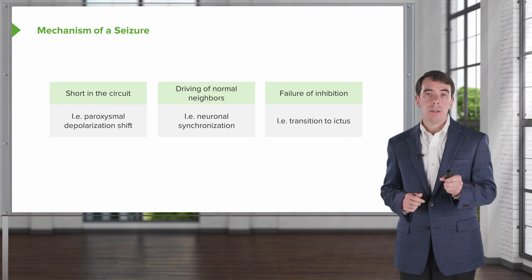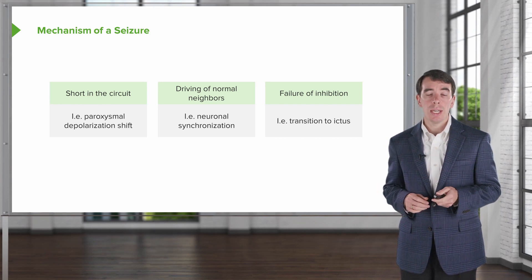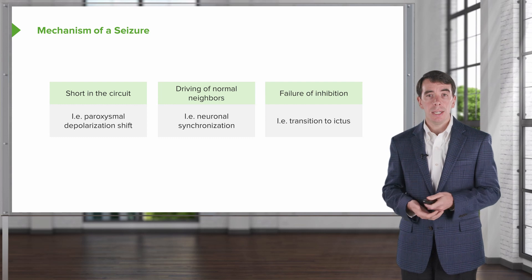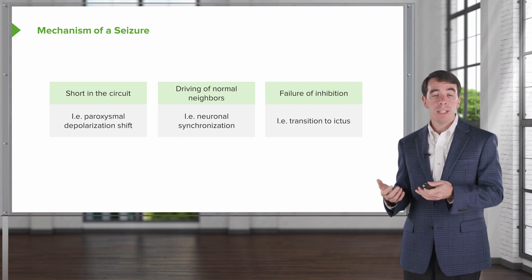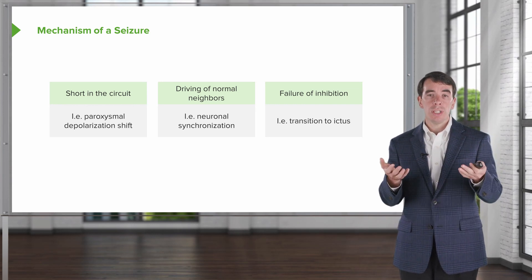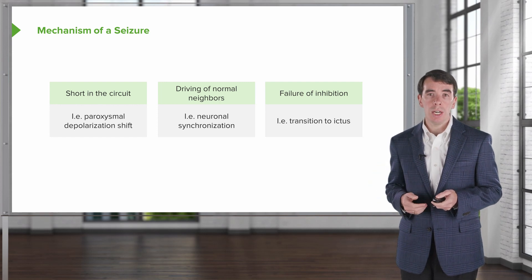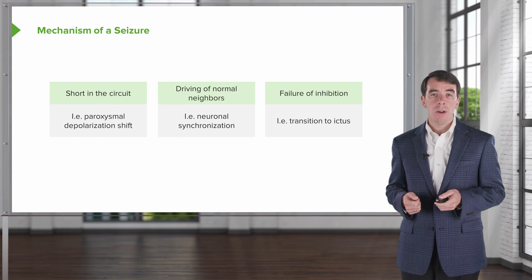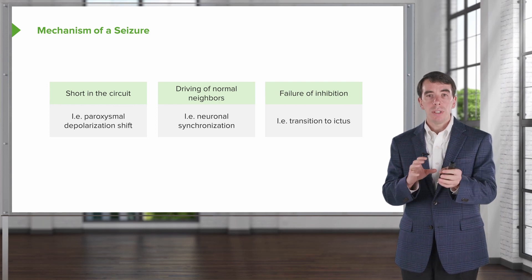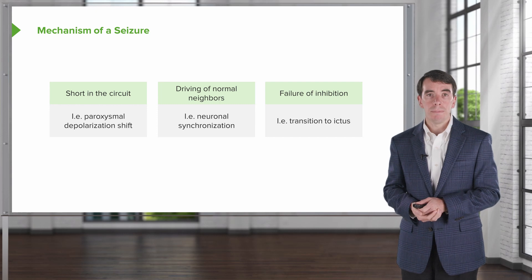When there is sufficient inhibition around a seizure focus, the seizure won't spread and we often don't see manifestation of seizures or symptoms. The goal of treatment is really to restore this failure of inhibition — to increase inhibitory tone in the brain. Let's walk through each one of those and understand what's going on with this short circuit, the driving of normal neighbors, and then the loss of inhibition.